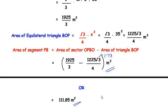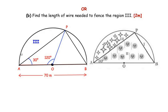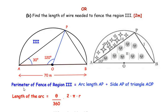The OR question: find the length of wire needed to fence region 3. Region 3's perimeter consists of the arc length AP and the side AP of triangle AOP. The formula for arc length is (theta/360) × 2πr, where theta is the central angle of the sector enclosing the arc and r is the radius.